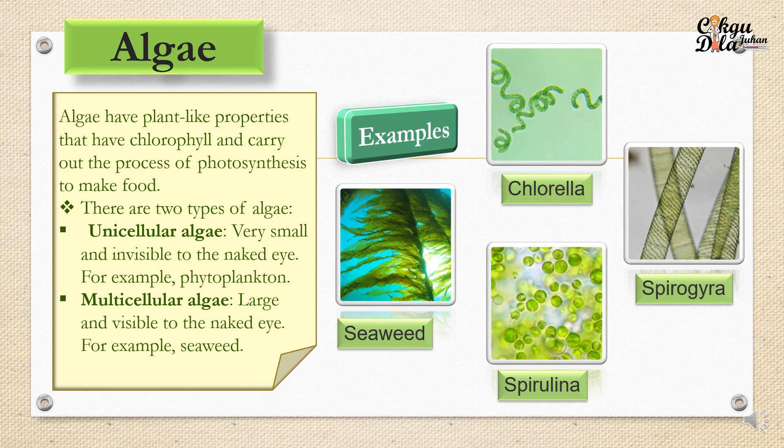There are two types of algae. The first one is unicellular algae — it's very small and invisible to the naked eye. For example, like phytoplankton. If you can remember plankton in Spongebob Squarepants, that's also one example of algae. Next, we have multicellular algae, which is large and visible to the naked eye. For example, like seaweed — we can see the seaweed.